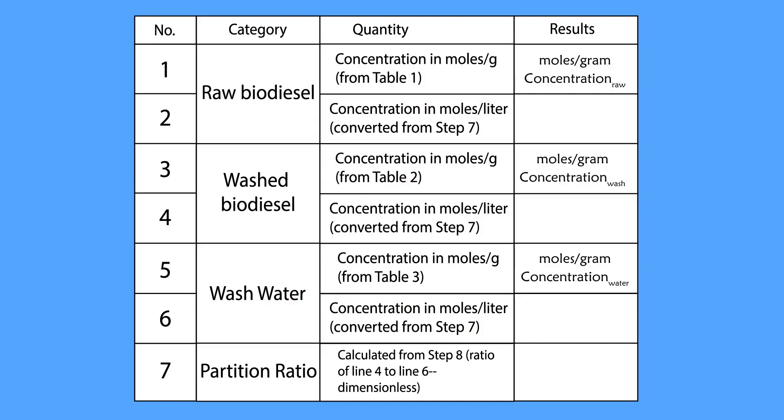To calculate the partition ratio, the measured values of potassium hydroxide in moles of potassium hydroxide per gram must be converted into concentration, or moles per liter. To do this, multiply the moles of potassium hydroxide per gram by the density of the solutions. The density of biodiesel is 870 g per liter, and the density of water is 1000 g per liter.